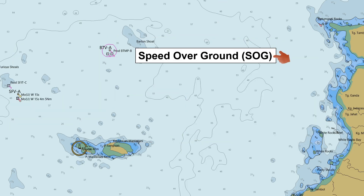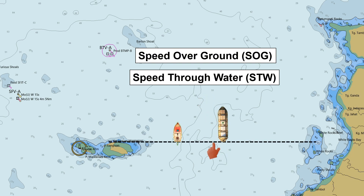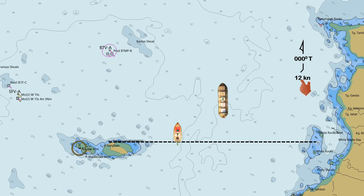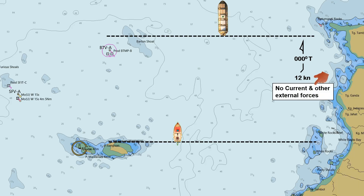To understand speed over ground and speed through water, let's have some scenarios. Assuming this is our ship, let's make this floating boat as the reference point to determine the speed through water, and we will use this point of the island as our reference point to determine the speed over ground. Assuming the ship is sailing due north with an engine speed of 12 knots, without current and other external forces. The parallel distance traveled by the ship in one hour from the island, which serves as a fixed reference point for determining speed over ground, is 12 nautical miles.